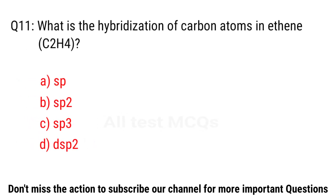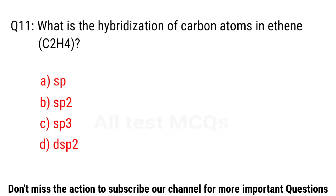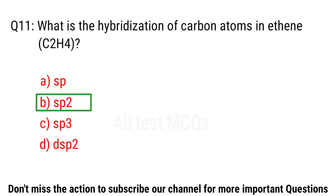Q11. What is the hybridization of the carbon atom in ethane? The right answer is option B. sp3.